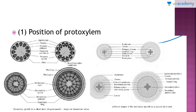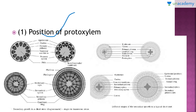This arrangement in the stem is called the endarch type of arrangement. Whereas in the root, protoxylem lies towards the periphery and metaxylem lies towards the center — this is called the exarch type of arrangement. Please analyze this diagram carefully.